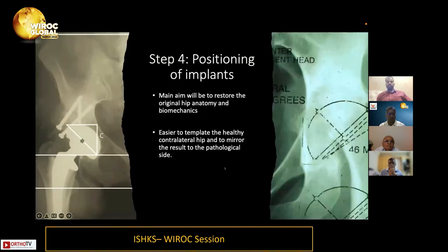Implant positioning aims to restore the original hip anatomy and biomechanics. It was considered easier to template the healthy contralateral hip and mirror the result to the pathological side.